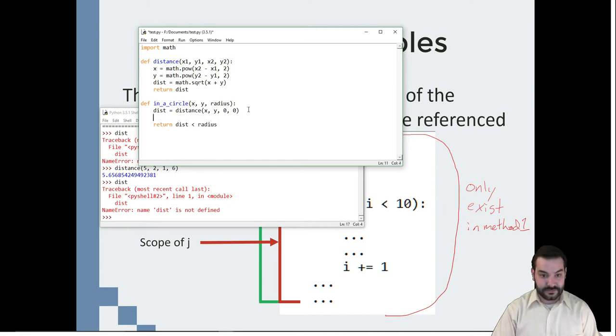Well, just on that note, this dist right here is not the same as this dist. This is where scope kind of gets a little fun and confusing for some people. This variable is not the same as this variable whatsoever.